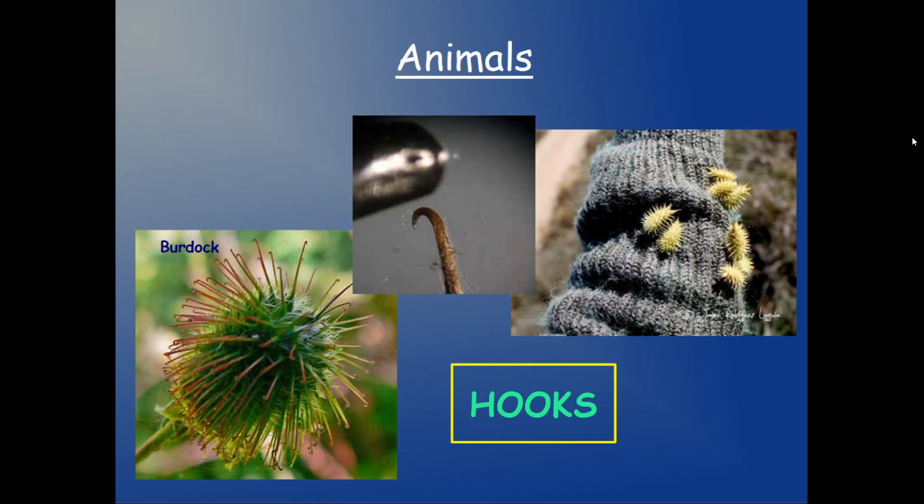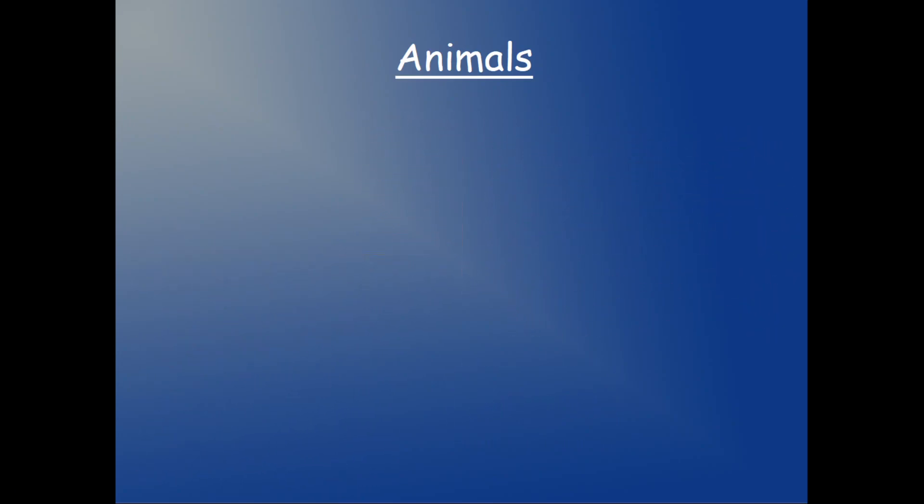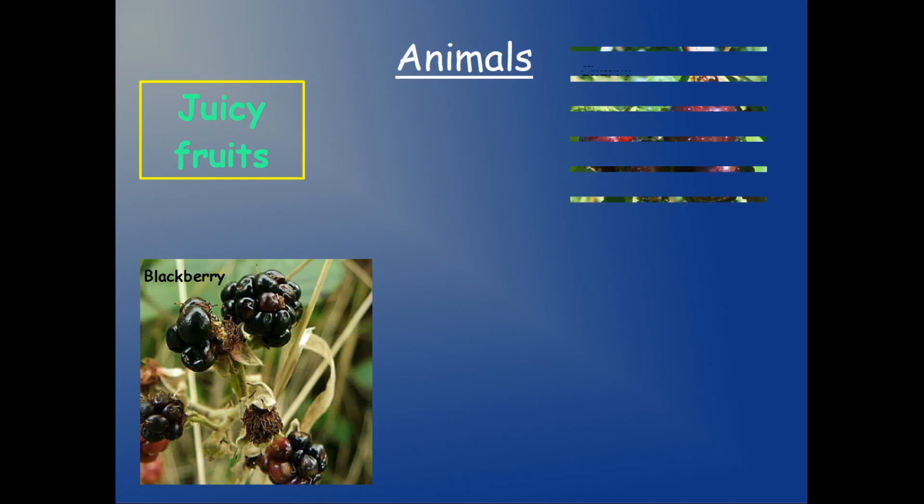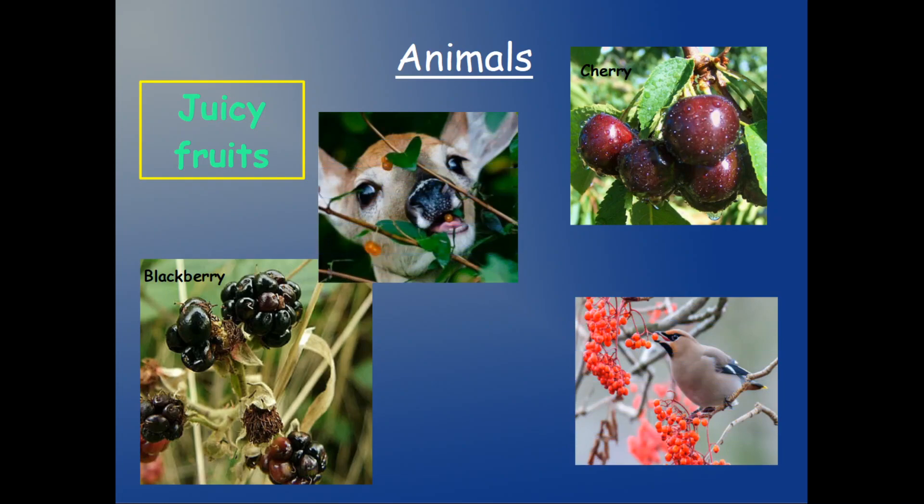So the seeds are going to fall far away from their mommy plant. No more competition. Perfect. Another technique: the next technique is juicy fruits. What does it mean? Well, if we cover the seed with a juicy fruit like blackberries or cherries, I want to eat them.